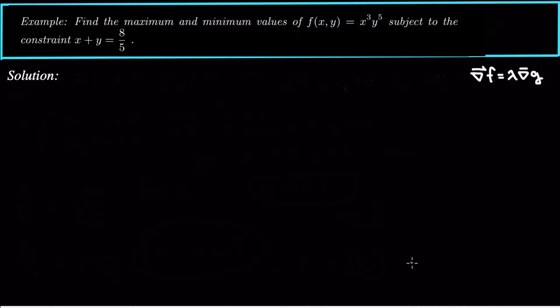This is called constrained optimization, and what we need to do here is use Lagrange multipliers. We're going to take the gradient of f and set it equal to a constant, in this case we call it lambda, times the gradient of g.